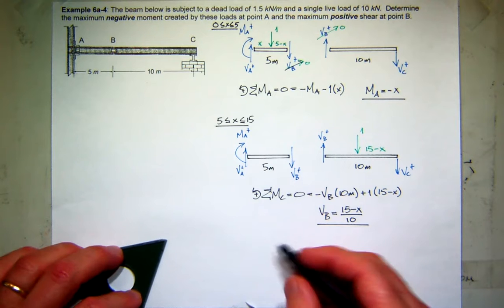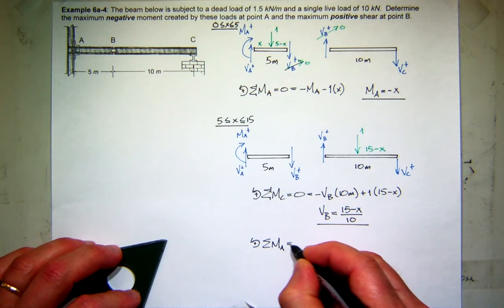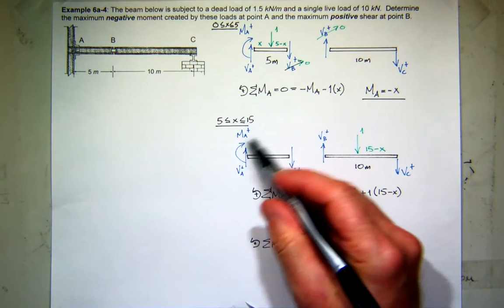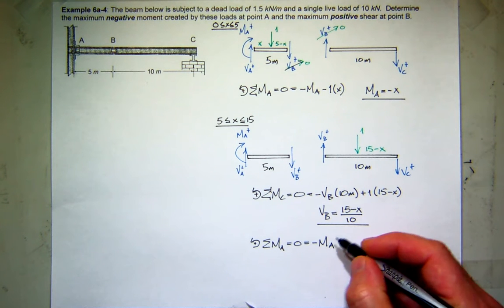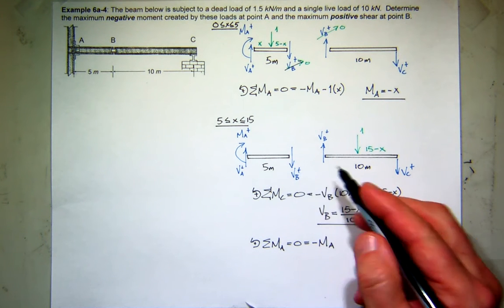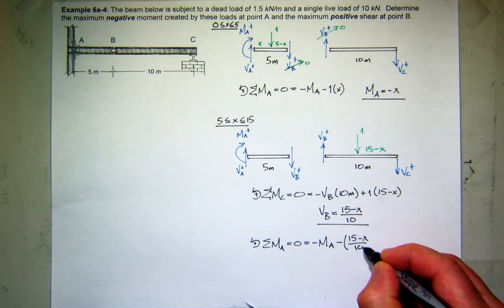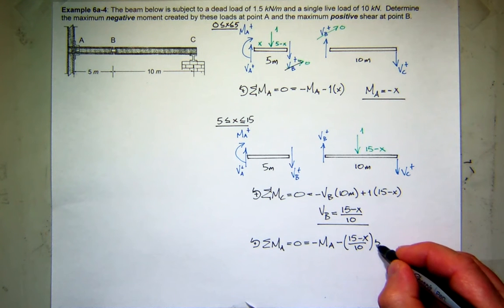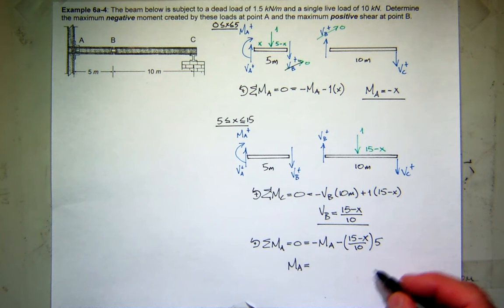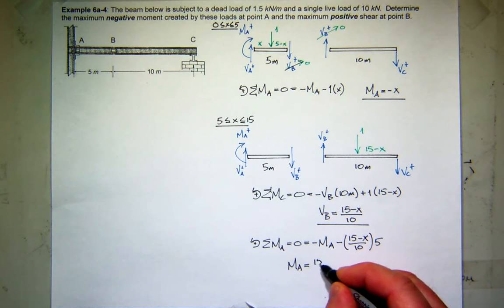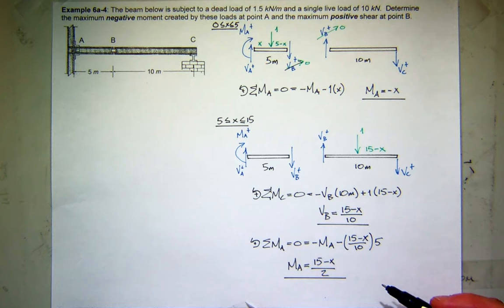When I sum moments at A, what do I have? I've got the moment at A, which is minus MA, and the shear at B. Creates negative moment. What's the shear at B? 15 minus X over 10. What's its moment arm? 5. So what's the moment at A? I'll just let that cancel. It'll be 15 minus X divided by 2.